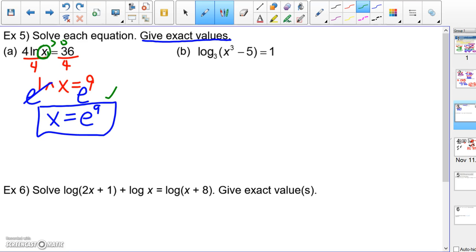Part B, log base three of x cubed minus five equals one. You can either look at the domain first or last. I think probably if you look at it first, you're less likely to make a mistake. But that thing inside parentheses must be greater than zero. x cubed minus five is greater than zero. This doesn't seem like it has anything to do with the problem, but it has to do with the domain.